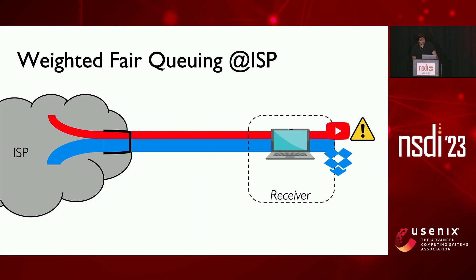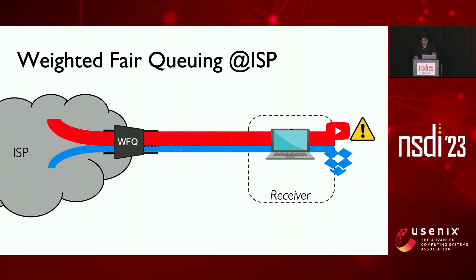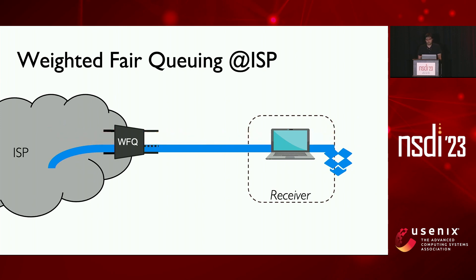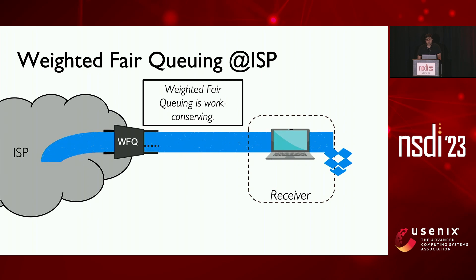We next tested the ideal scenario when the ISP had knowledge about how to shape traffic before the bottleneck and could do weighted fair sharing according to user preferences. Since the ISP lies just before the bottleneck link, it can decide what to put on the link and can ensure the video gets a higher share of the bandwidth. Moreover, when the video flow stops or pauses after filling up the buffer, the ISP can reallocate unused bandwidth to the bulk flow, which makes it work-conserving as well.